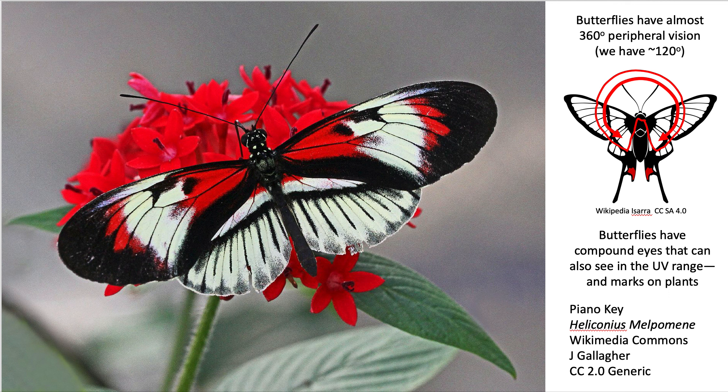Butterflies have almost 360-degree peripheral vision — when looking forward they can nearly see behind them. Ours is about 120 degrees, a third of a circle, roughly the angle of the butterfly's top wings. They have compound eyes made up of many segments, and they also see in the UV (ultraviolet) range. You can research further about the UV markings on plants that attract butterflies to them.